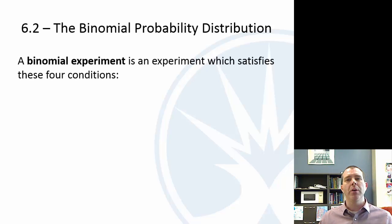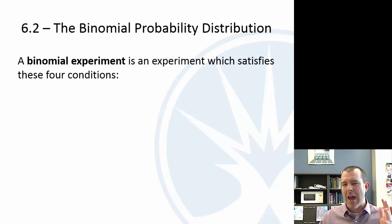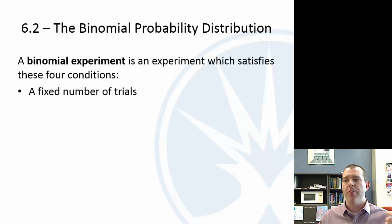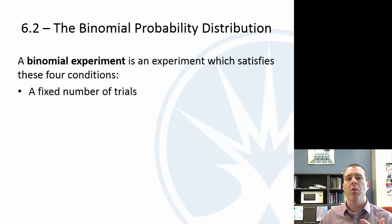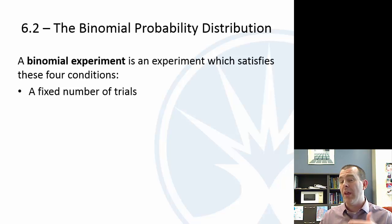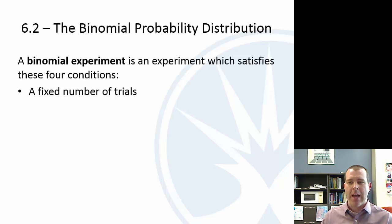A binomial experiment has four conditions. The first condition is there's a fixed number of trials. With the number of sixes, we were rolling the die five times — not rolling until we get a six, but rolling it five times and counting the number of sixes.